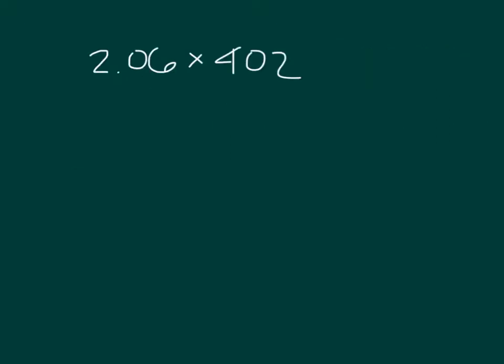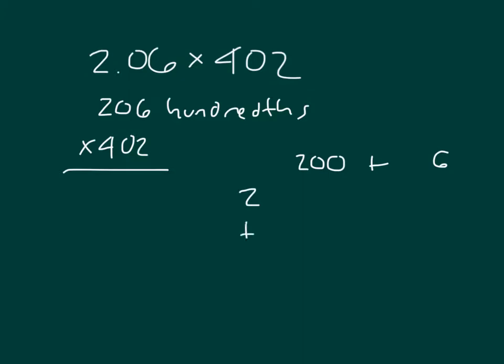Here's another problem. Let's set this up a different way. We have 2.06 times 402. That would be 206 hundredths times 402. Let's go ahead and set this up using an area model. 206 could be broken down into 200 plus 6. 402 would be broken down into 2, plus 400.